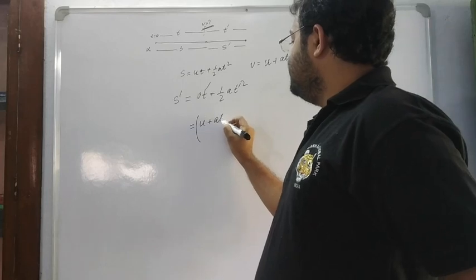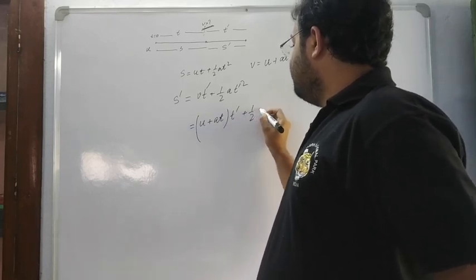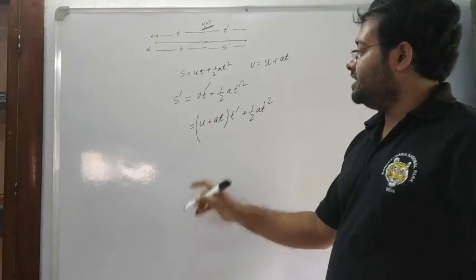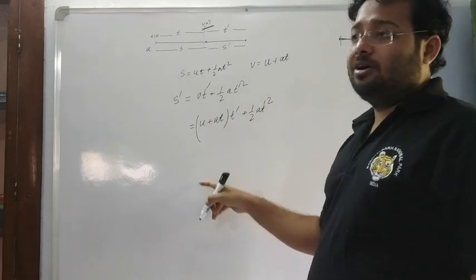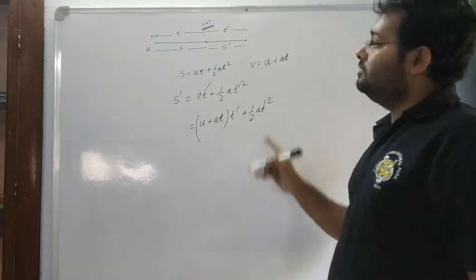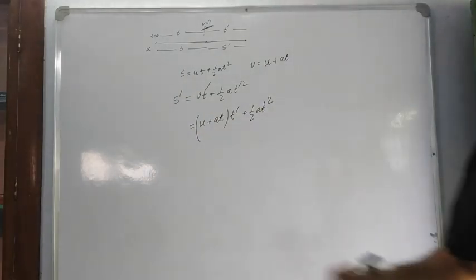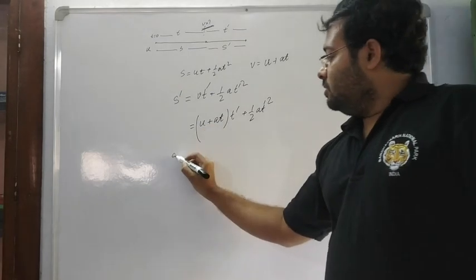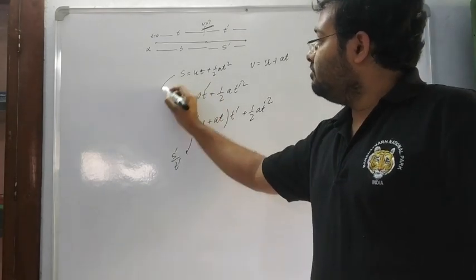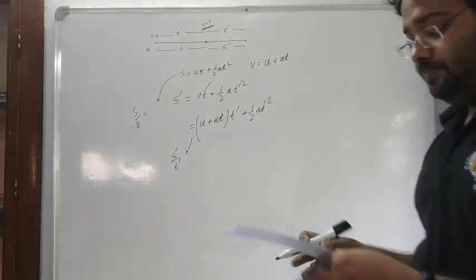Substituting V as U plus AT into the expression, we get terms with U, T, t' and a. From here, find s' by t' and s by t, and do the sum to get the required expression.